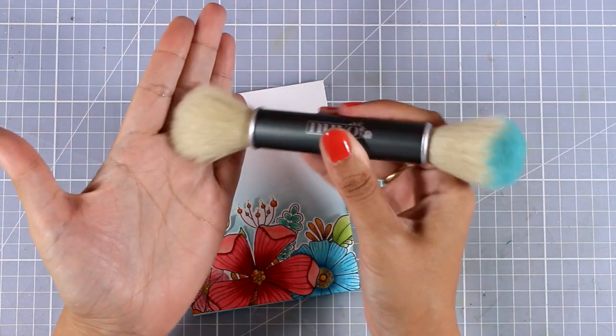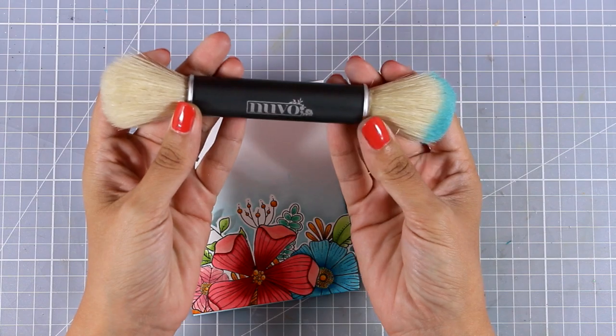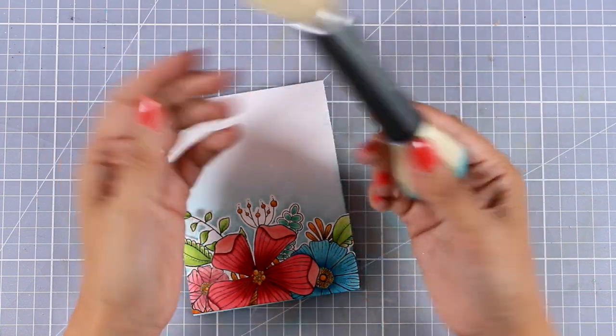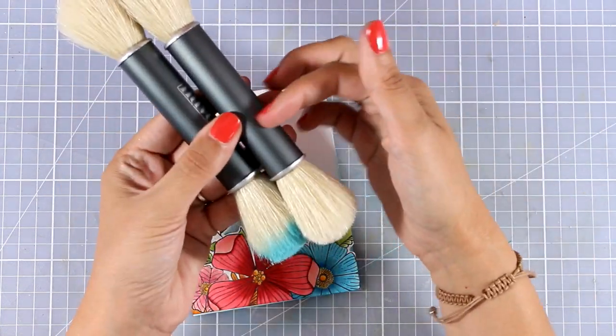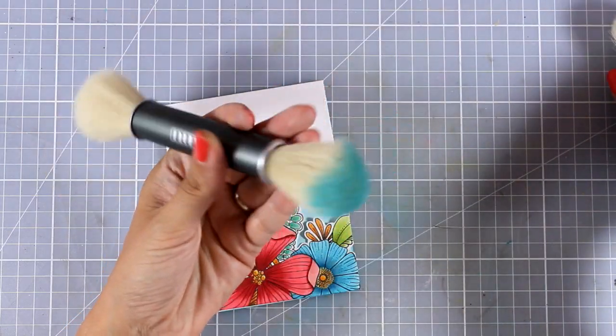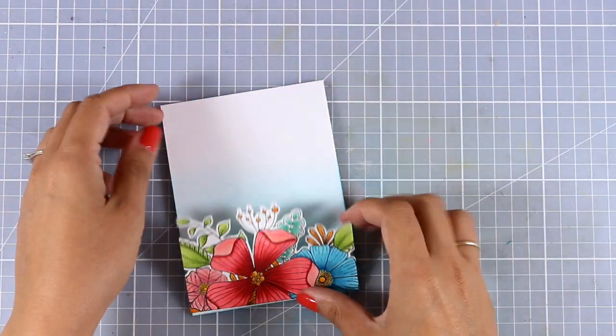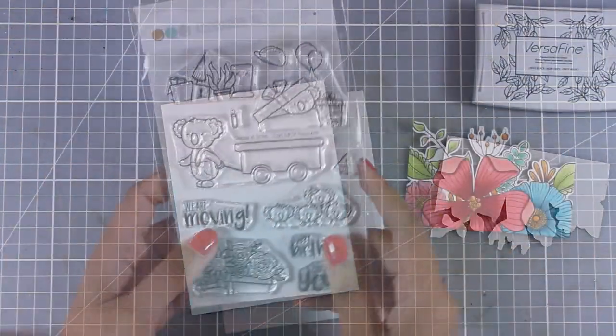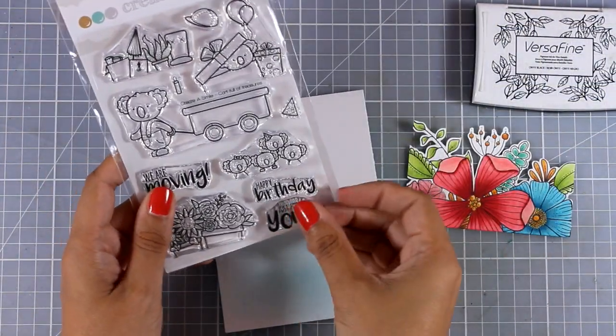So this is a dual tip brush, as you can see. It is by Nuvo, a Tonic Studios product. In the package you get two of them and you don't really need a lot of these brushes. I will be using the blue tip for any ink pad that I have that has any shade of blue.